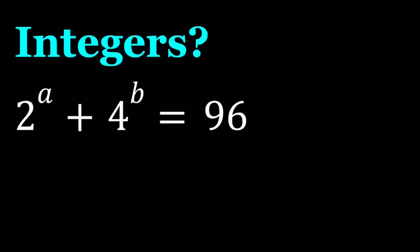Hello everyone, in this video we're going to be solving an equation for integers. We have 2 to the power a plus 4 to the power b equals 96, and we're going to be looking for integer solutions.